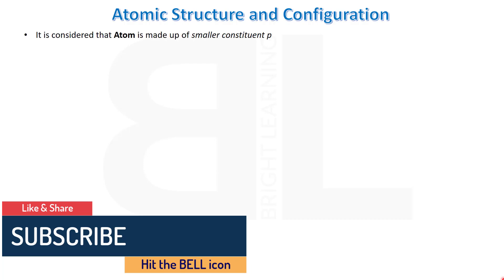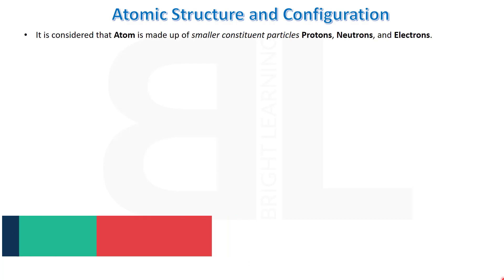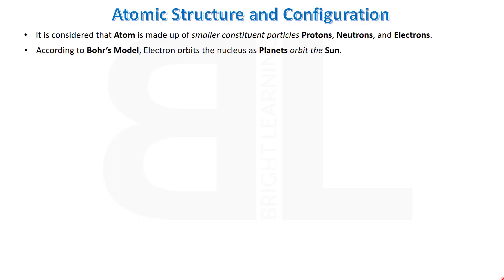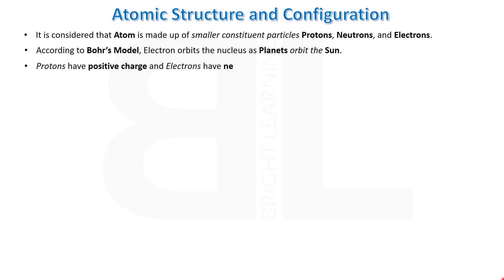It is generally considered that an atom is made up of smaller constituent particles, and these particles are protons, neutrons, and electrons. Protons and neutrons are present inside the nucleus, while electrons are not. According to Bohr's model, electrons orbit the nucleus as planets orbit the Sun. Protons have positive charge and electrons have negative charge, so they attract each other.